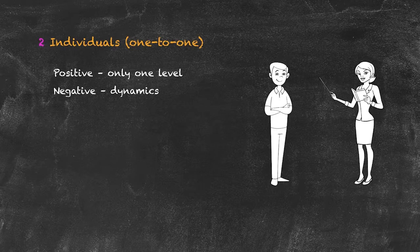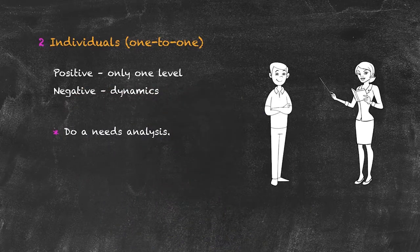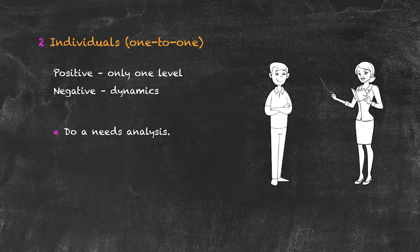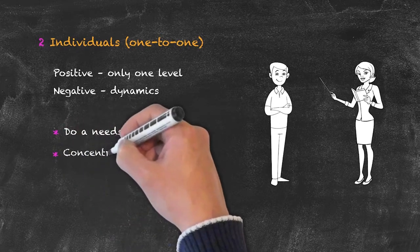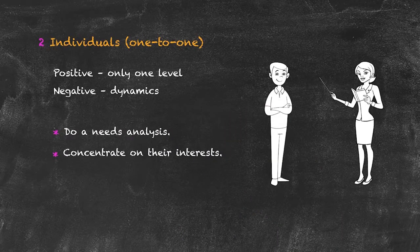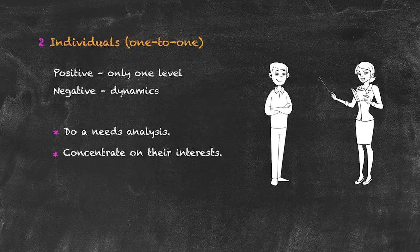Before starting a one-to-one course, do some form of needs analysis to find out what the student already knows and what they will need from their English learning program. From that needs analysis, you can then create a syllabus. Concentrate your teaching on the student's interests to keep lessons exciting, as there is potential for lessons to become quite boring with only one student.